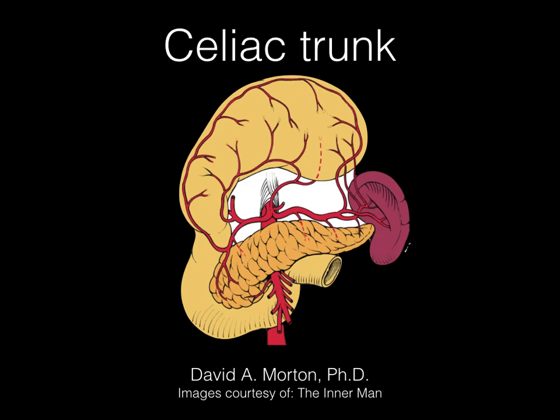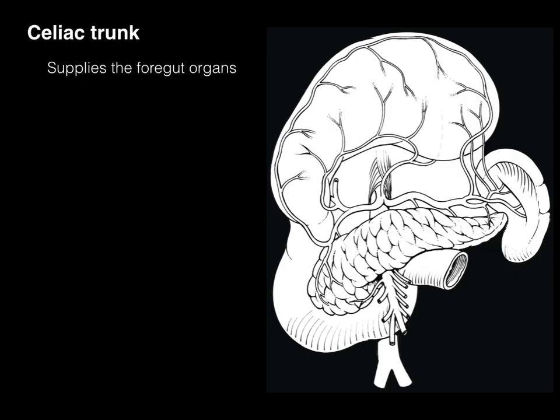The GI tract requires an extensive vascular supply, so the next three tutorials will go over the arterial supply to the different regions of the GI tract: the celiac trunk, superior mesenteric artery, and inferior mesenteric artery. The first is the celiac trunk.